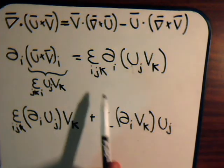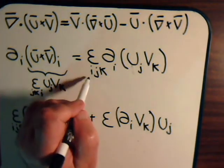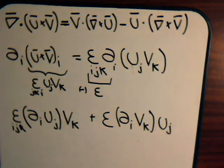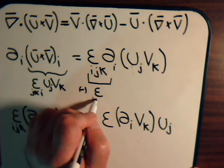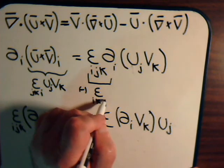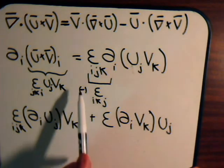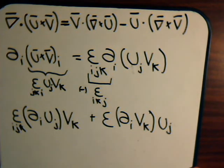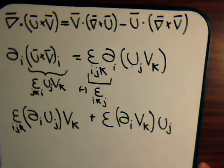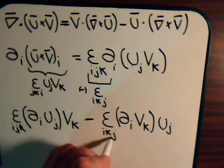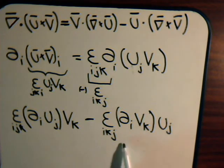Now notice that epsilon i j k is minus epsilon i k j, because shifting k over one position is a single permutation — an odd number — which gives a negative sign. Since in the second term we have indices i, k, j, the plus becomes minus and we have minus epsilon i k j, so now these indices match each other.